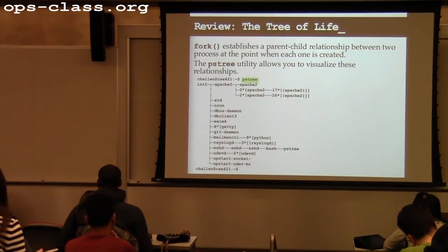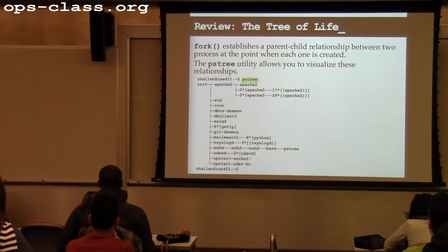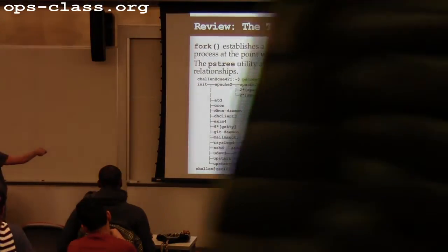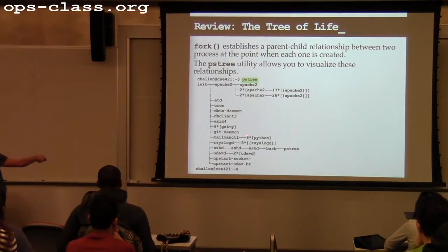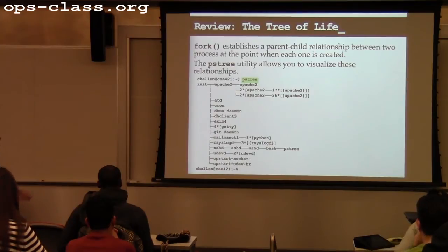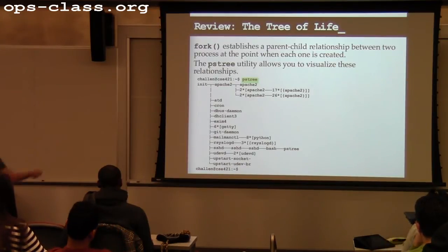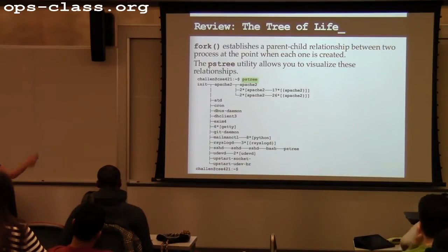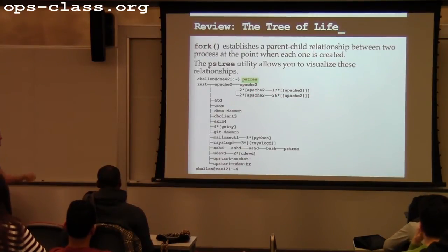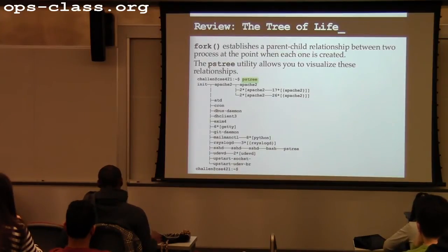Using the PSTree utility: the square brackets indicate that there are two copies of an Apache process. Eight identical copies of a Python process means Mailman either called fork and had it exec the same program, or Python was called once and forked itself seven times. The notation with numbers indicates threads inside each process — for example, Apache has two processes with 17 threads each for a total of 34 threads, and two other processes with 26 threads each. That's the semantics of PSTree.